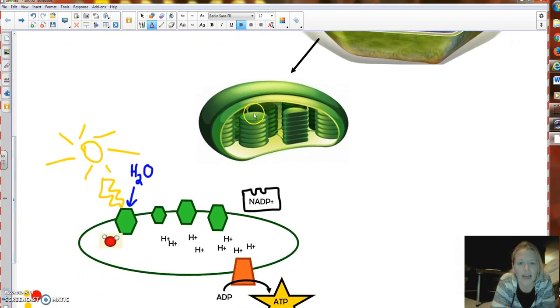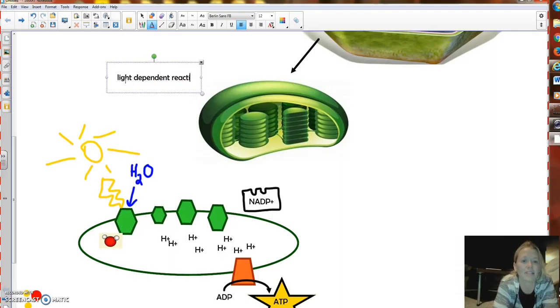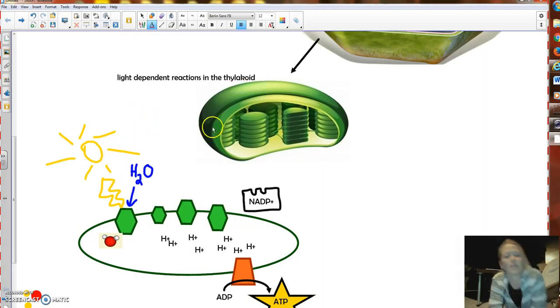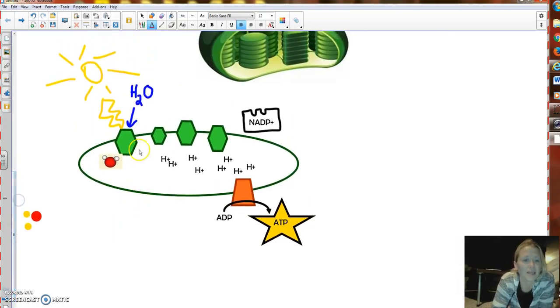And remember we've got these discs called the thylakoid, and everything on the outside is the stroma. We're focusing on the thylakoid. So let's just put that up here. We're talking about the light-dependent reaction in the thylakoid. So we're focusing on these discs. I've drawn in a little disc. Here is our thylakoid.